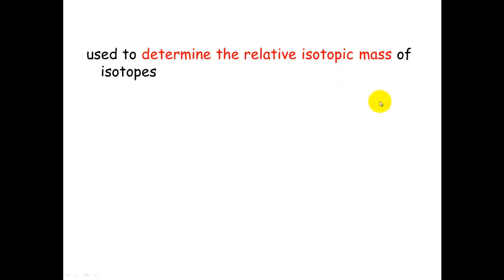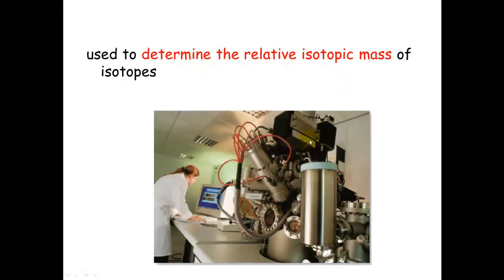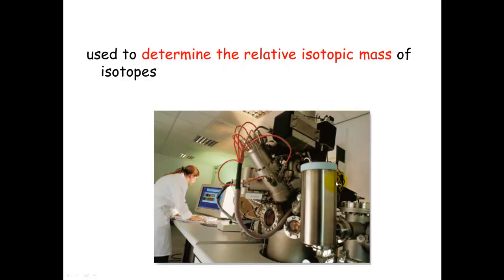It's used to determine the relative isotopic mass of different isotopes. And it's this big machine that looks like this. That was actually from a few years ago. They've got smaller desk-sized ones now.